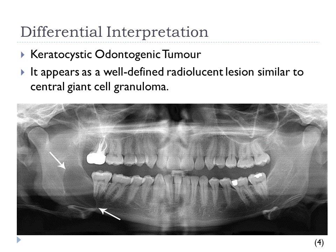One differential interpretation is keratocystic odontogenic tumor. It appears as a well-defined radiolucent lesion, similar to Central Giant Cell Granuloma. In this pantomograph on the right mandible, you can see the well-defined radiolucency.